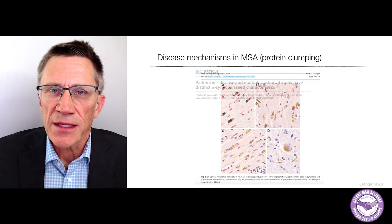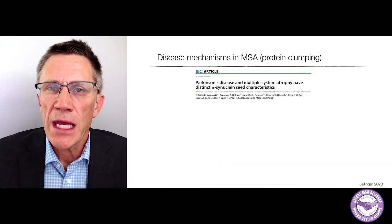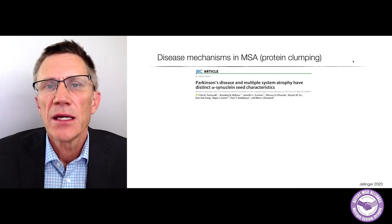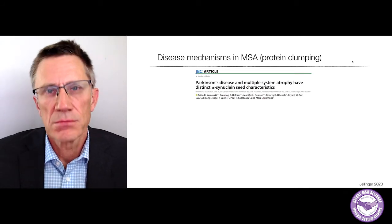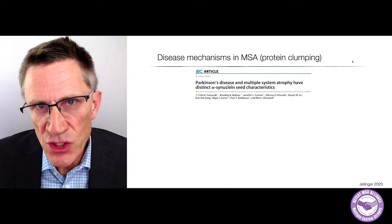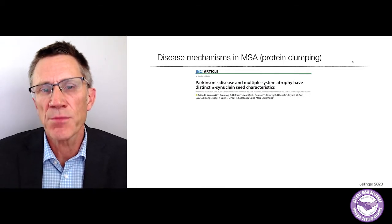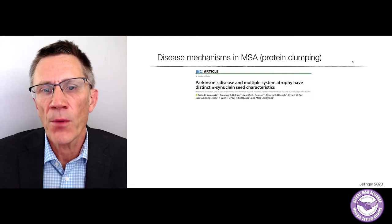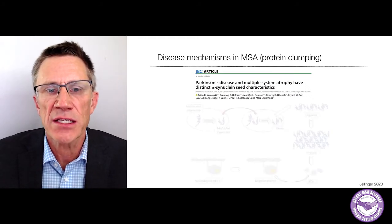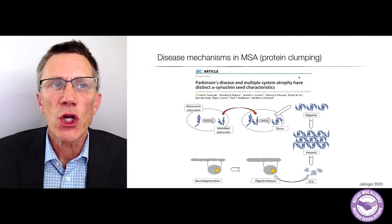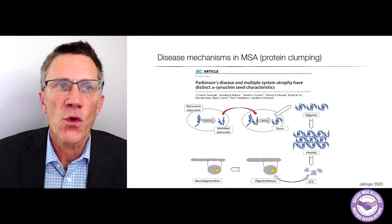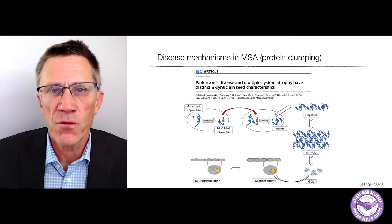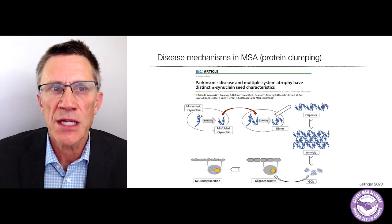The clumps that form in MSA are not just different in where they're located compared to Parkinson's — being in oligodendrocytes in MSA and in nerve cells in Parkinson's — but they're also different in their biochemical properties. You have the normal, soluble, monomeric form of synuclein, meaning it's one molecule at a time.